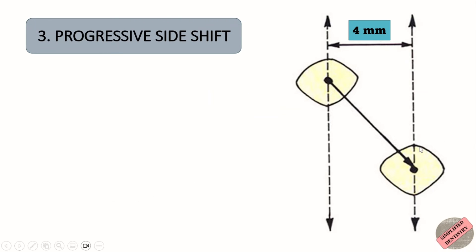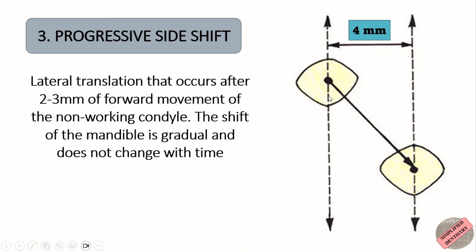Third is progressive side shift. This is the lateral translation that occurs after 2 to 3 mm of forward movement of the non-working condyle. The shift of the mandible is gradual and does not change with time.